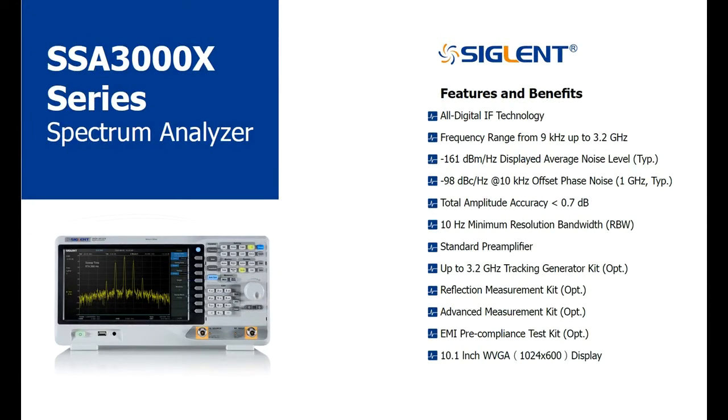Let's pull up the datasheet for the SSA 3000X and take a closer look at some of the features and benefits. DANL stands for displayed average noise level and it indicates the noise floor of the instrument. Lower noise floor values enable you to observe lower power signals. This is especially important when you are hunting for harmonics of a signal or potential interference sources.